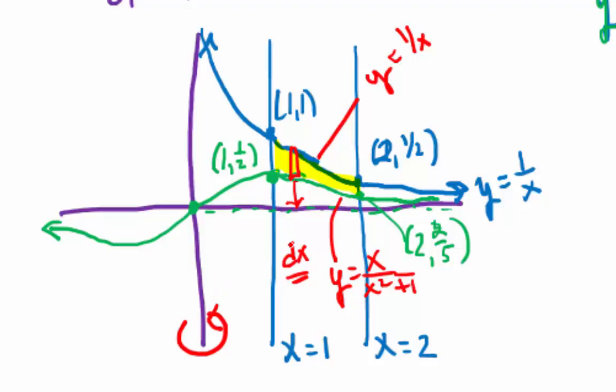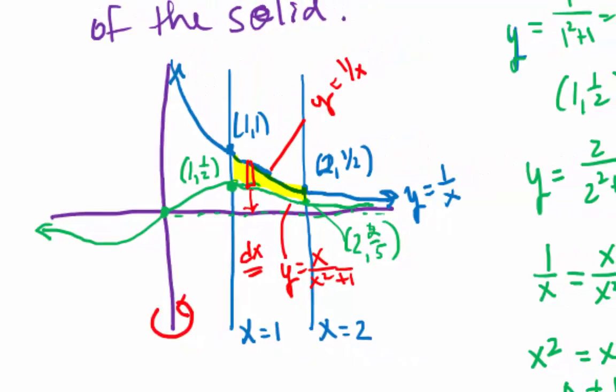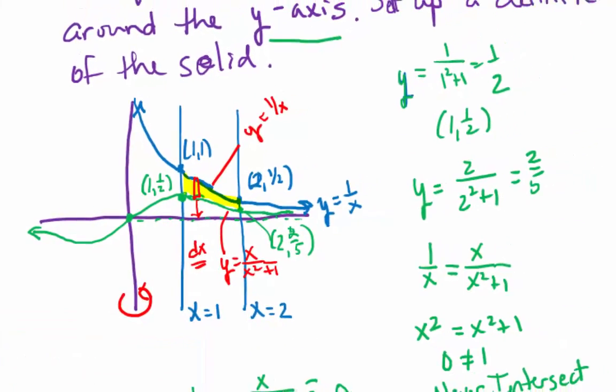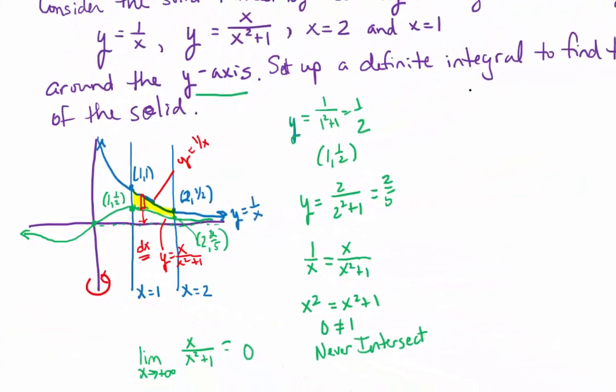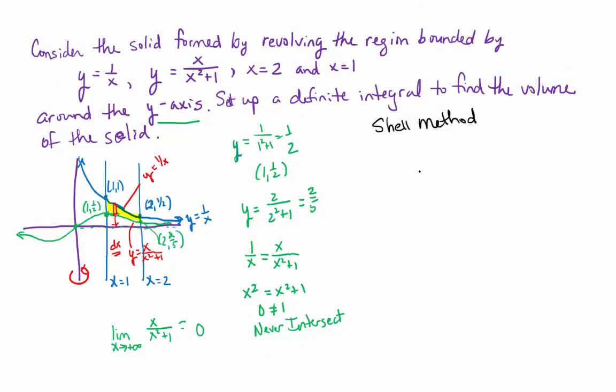Do you see how the thought process goes there? So you draw your graph. You draw what axis you're revolving around. You determine if you want this to be a dx problem or a dy problem. You draw the appropriate rectangle and whether it's parallel or perpendicular to the axis dictates which method you have to use. Now it's possible you pick wrong and you go to set it up and you say, oh wait, this isn't going to work. So you try the other one. But this is the one that I want to try first.